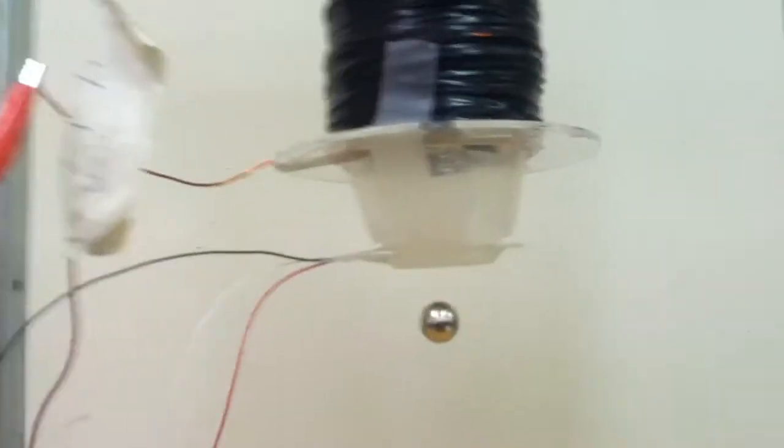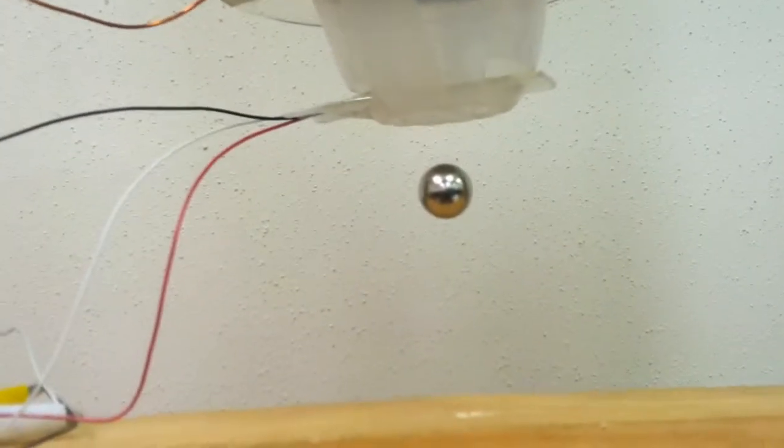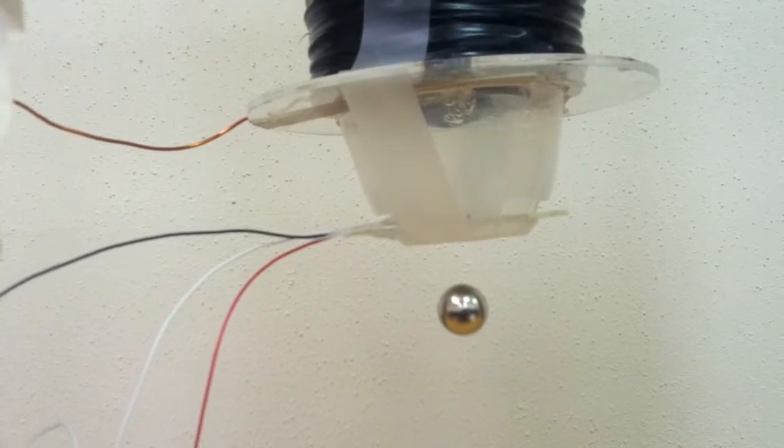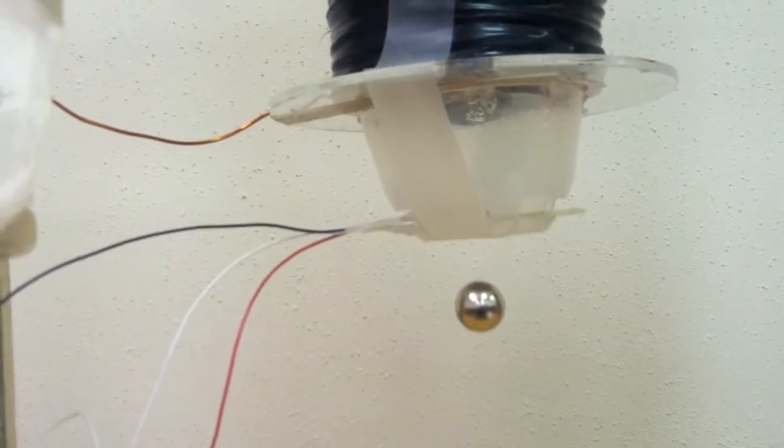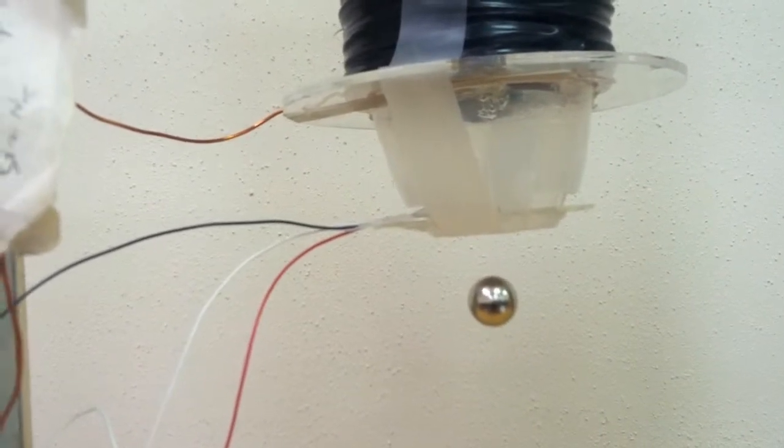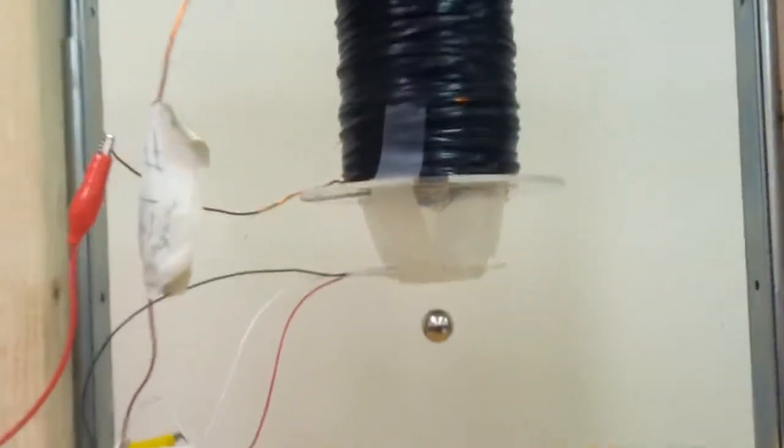So as you can see the ball levitates a certain distance from the coil, and that distance is pretty far. The reason why that distance is pretty far is because I am using a magnetic ball to increase the distance from the coil to the ball.